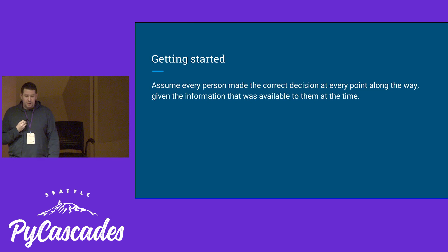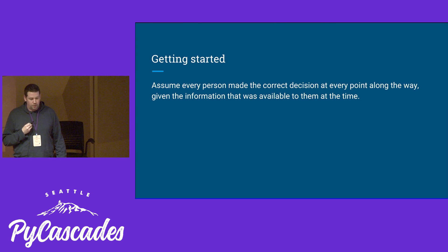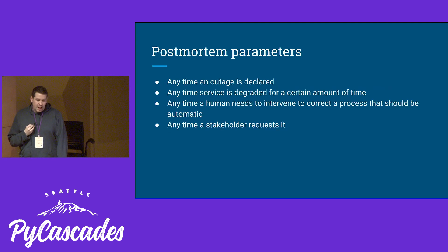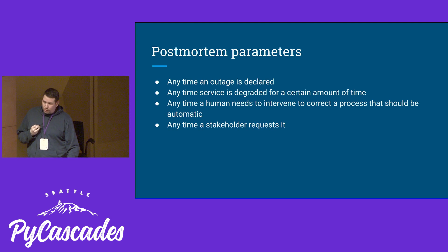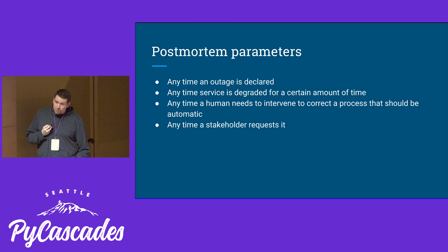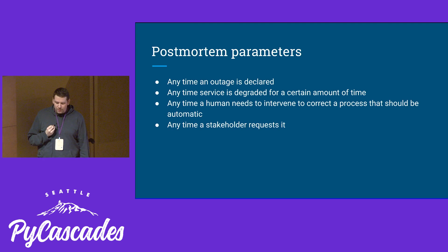So how do you get started? First, you need to make sure that everyone on your team understands what blamelessness means — that is, assume every person made the correct decision at every point along the way given the information available to them at the time. Next, it's ideal to draw up specific procedures before the first incident. You'll probably refine them a bit, but it helps to have something in place before your first time through. Then set some parameters on when you will hold your postmortems: any time an outage is declared, any time service is degraded for a certain amount of time, any time a human needs to intervene to correct a process that should be automatic, or any time a stakeholder requests it. It might be a good idea to consider running a few postmortems on near misses if you don't frequently have incidents — this gives you practice before the big one hits, and you'll probably learn something along the way.